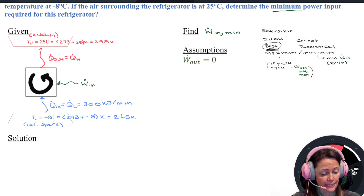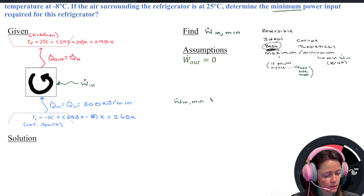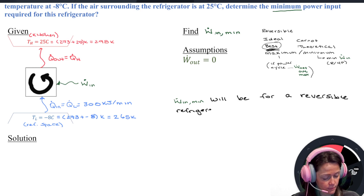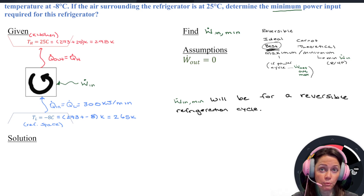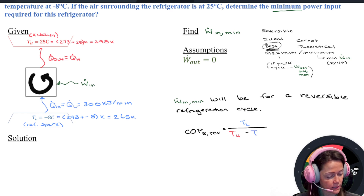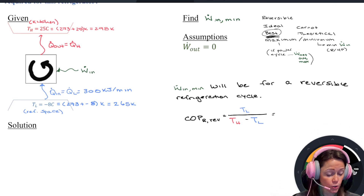So I'm trying to find W dot N min, which will be for a reversible refrigeration cycle. Let me calculate the performance of a reversible refrigeration cycle: COP reversible equals TL over TH minus TL. Again, temperatures must be in absolute units. Plugging in, I get 8.03.